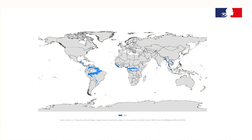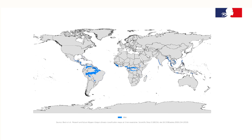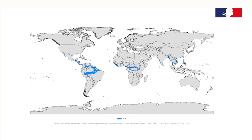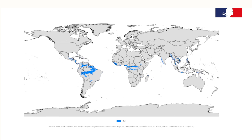Tropical monsoon climate results from the monsoon winds, which change direction according to the seasons. This climate has a driest month which nearly always occurs at or soon after the winter solstice for that side of the equator, with rainfall less than 60 mm. Tropical wet and dry, or savanna climate, is considered as two types in relation to longer dry or lighter rainy season.